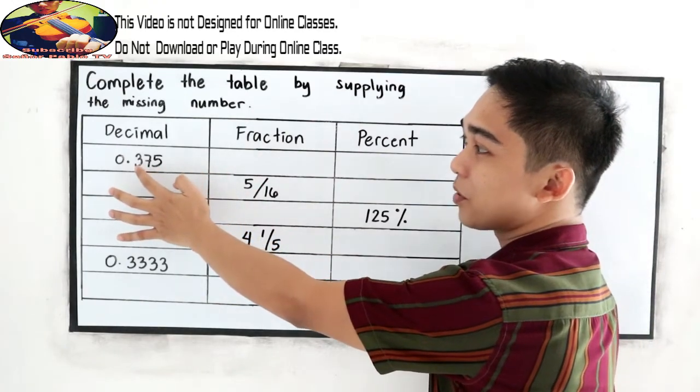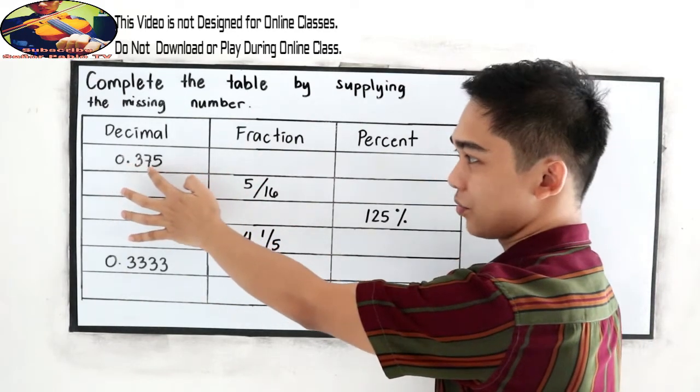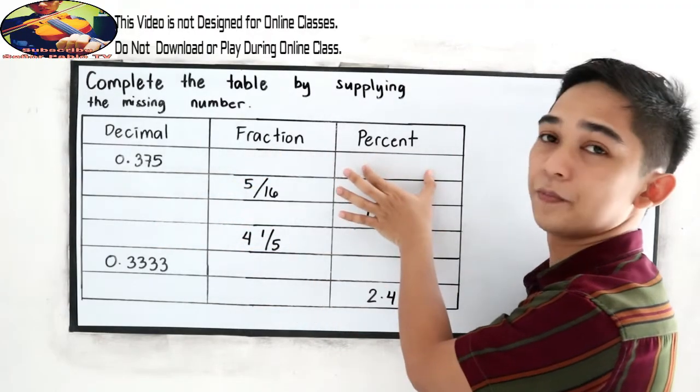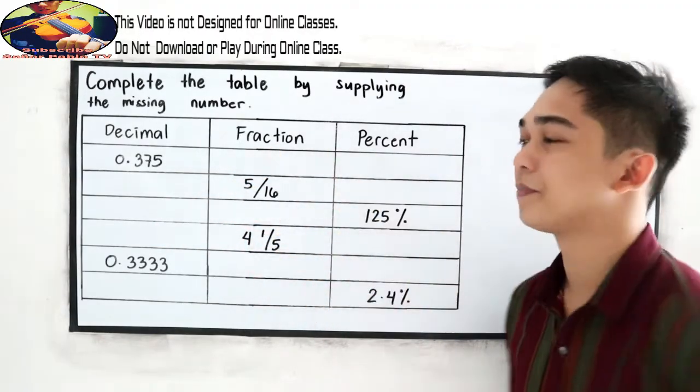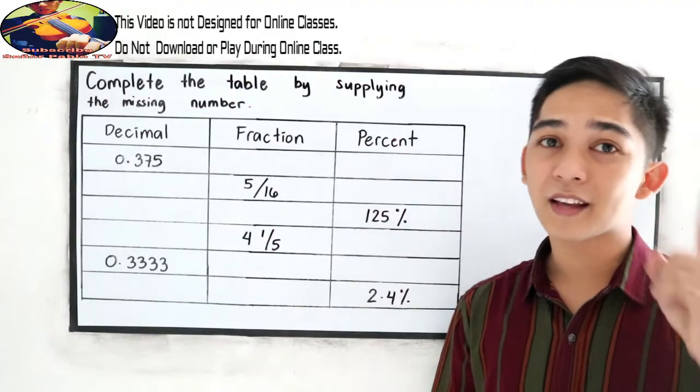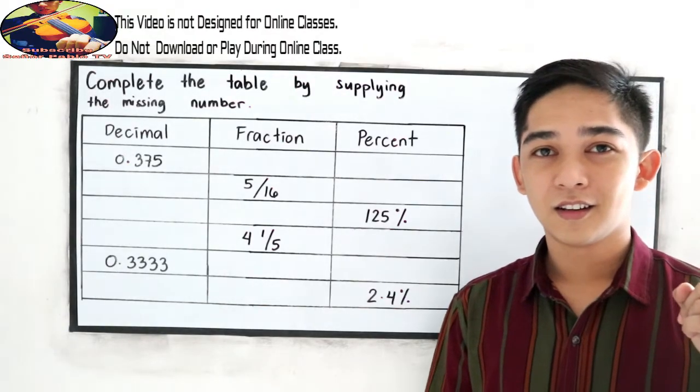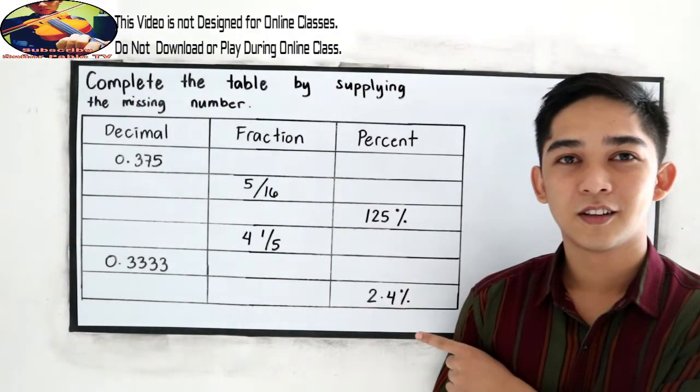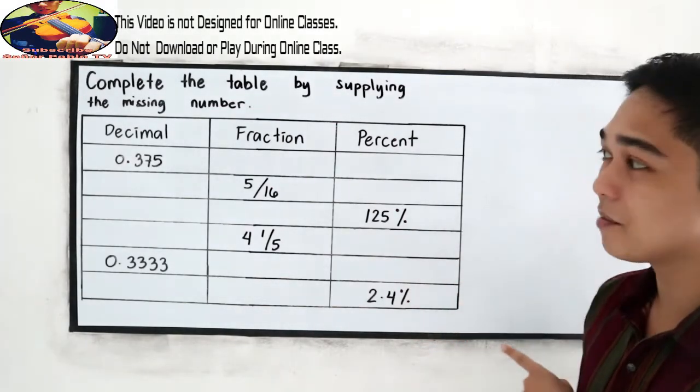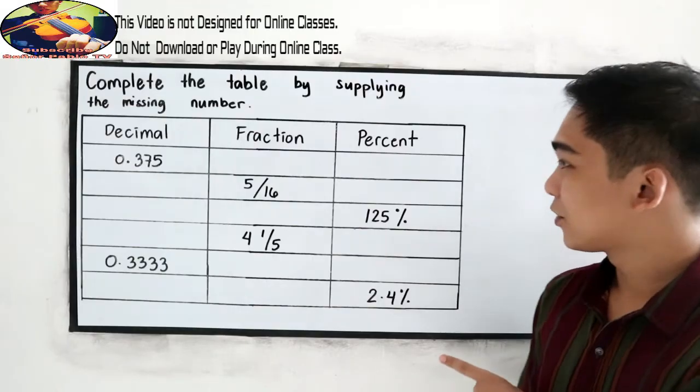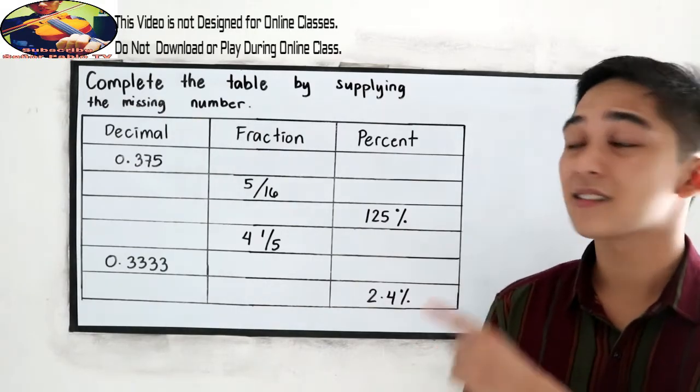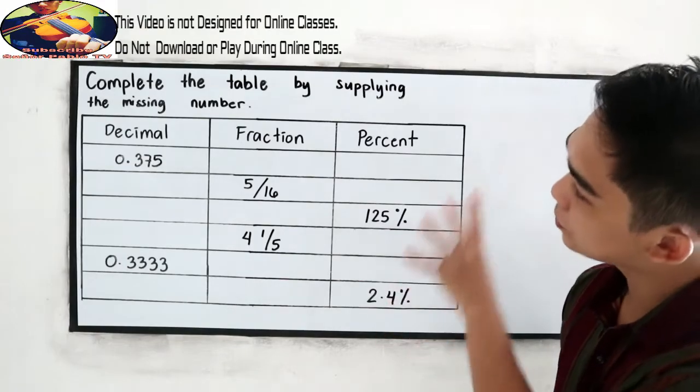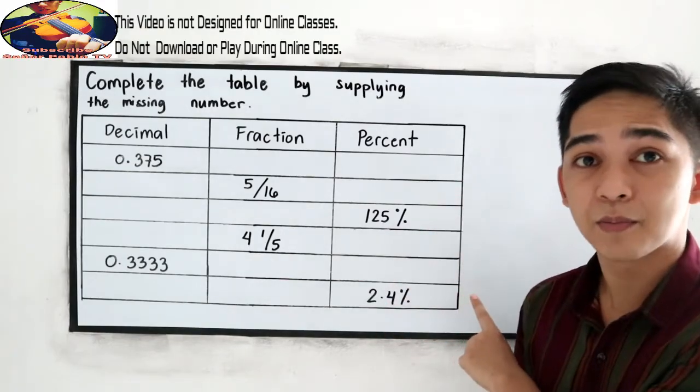In our number 1, 0.375, we're going to convert into fraction, percent and so on. So our technique, study the table first. And then after studying the table, then try to answer the easiest number or the easiest problem here in our table.